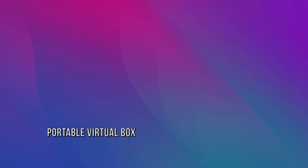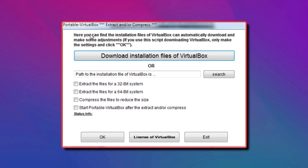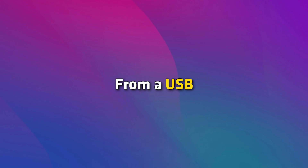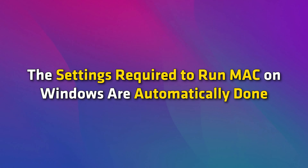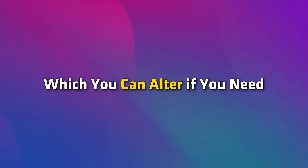3. Portable VirtualBox. Portable VirtualBox is one of the best emulators that lets you run any operating system from a USB without installing it on your PC. The settings required to run Mac on Windows are automatically done, which you can alter if you need.